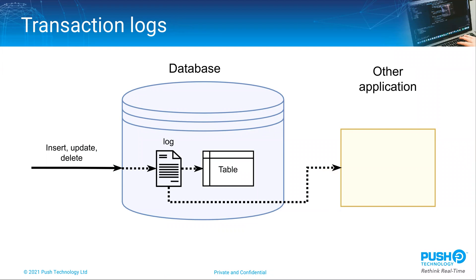Databases typically record changes in transaction logs, sometimes called a journal or binary logs amongst other names. This is an audit trail of what has happened in the database, generally used to provide transaction support and recovery capabilities. Because it's an audit trail we have a natural buffer of operations on the database. If we were able to read these logs we'd have another way to detect changes without having to mess about with triggers. Unfortunately the implementation and means of accessing transaction logs are highly specific to each database vendor and not guaranteed to be well documented or have the same implementation between different releases.